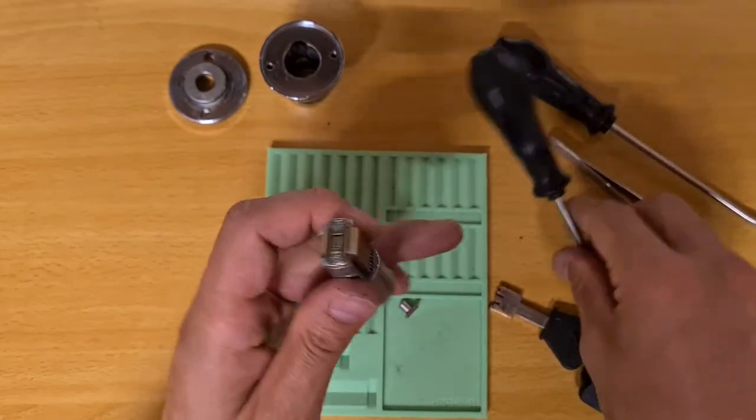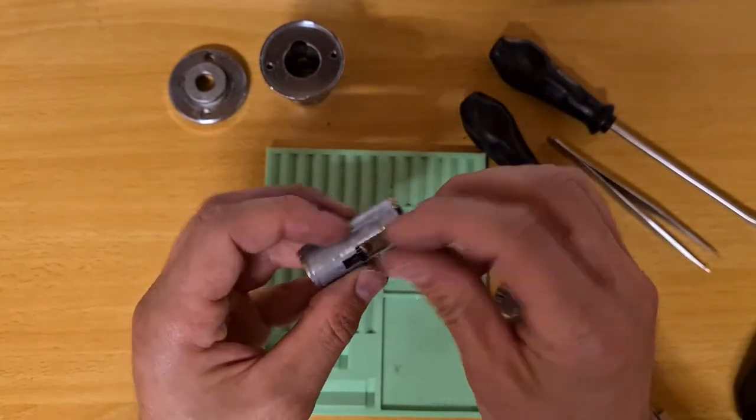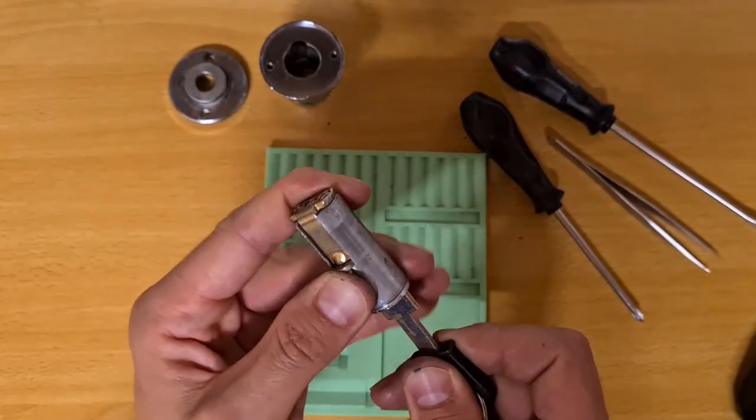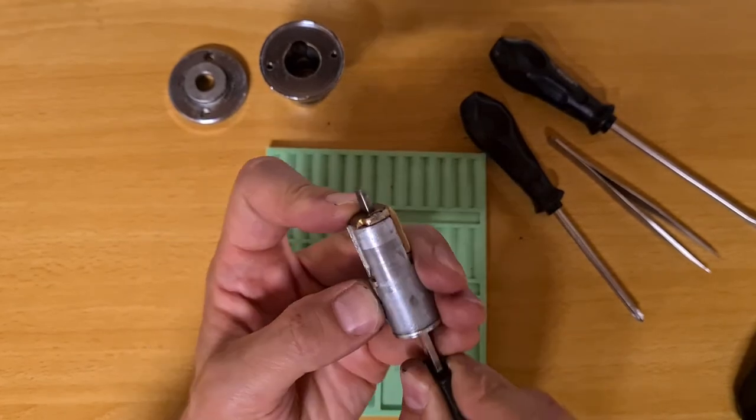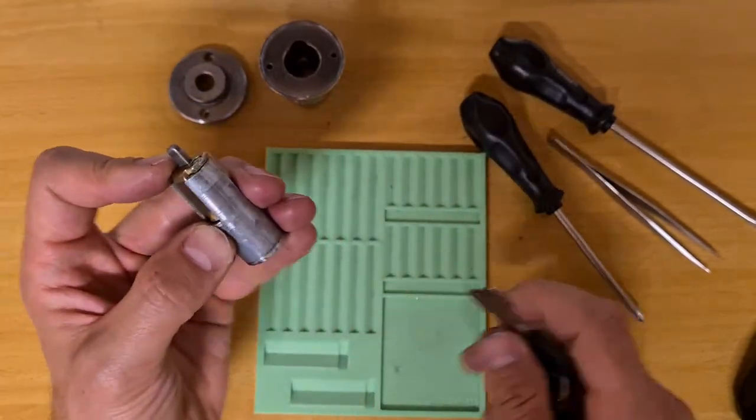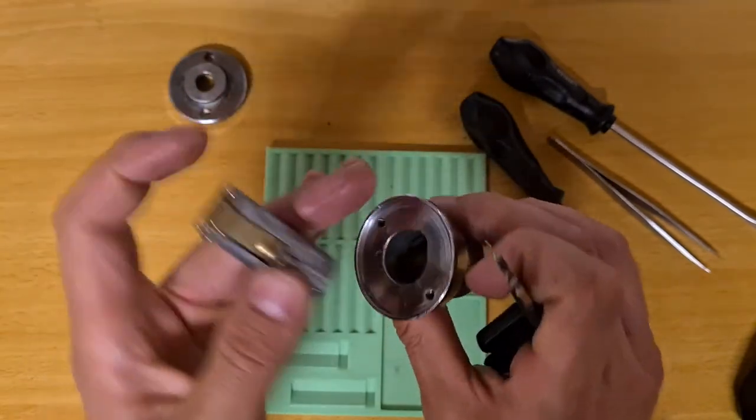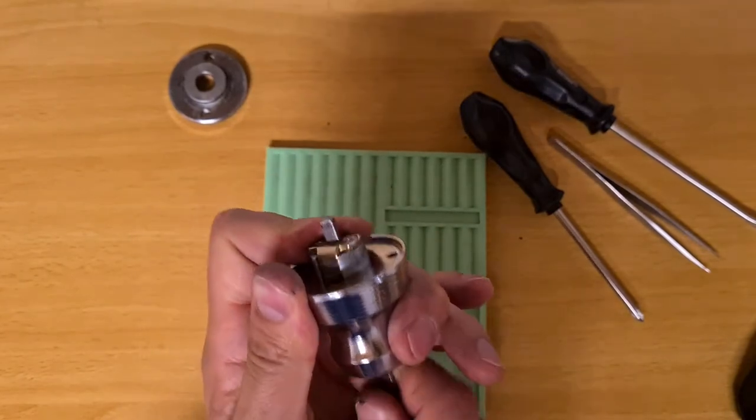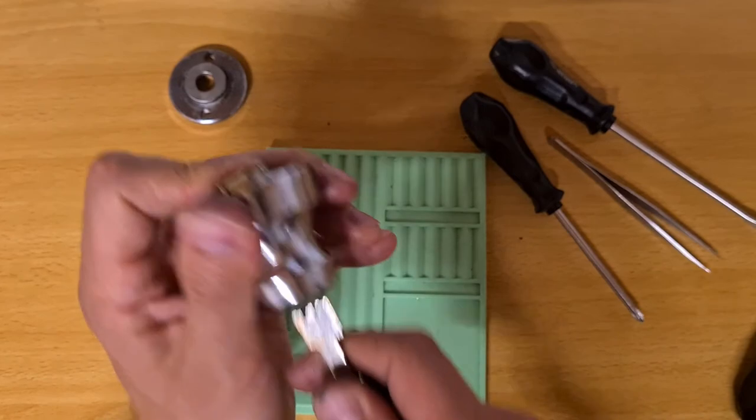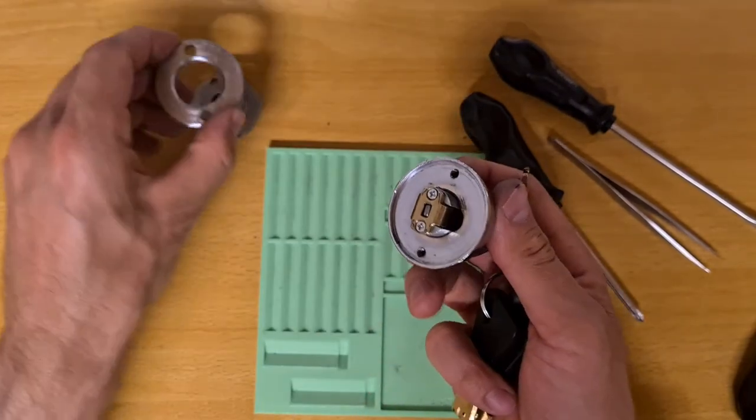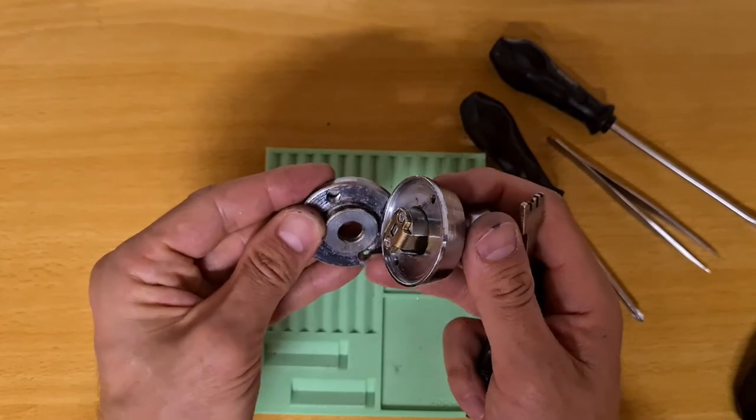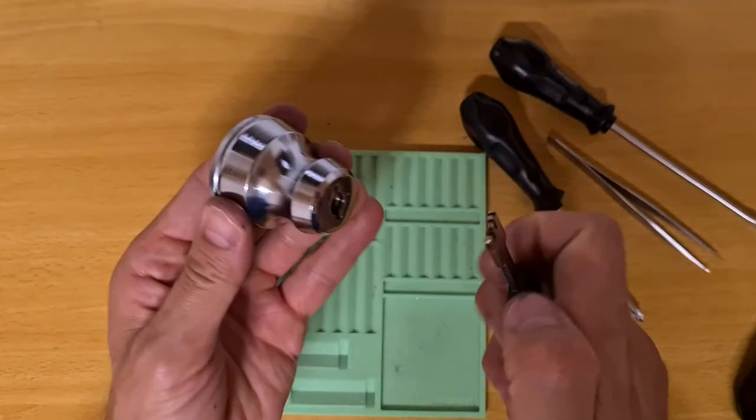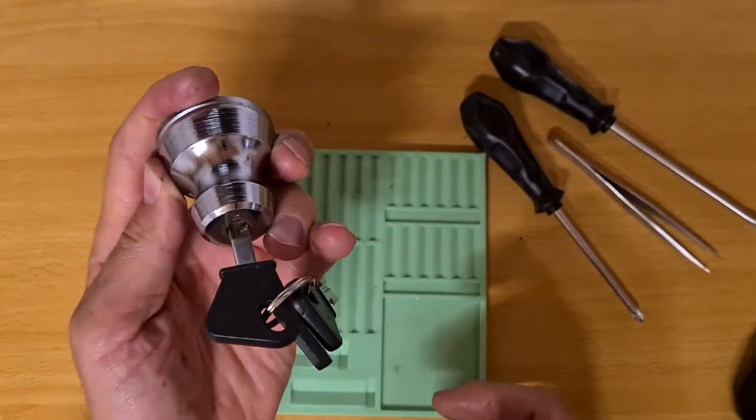All right. So that's the cylinder back together, or at least its core. Let's see. And the sidebar is in. And it can be turned and operated. With that, thank you very much for watching and enjoy the rest of your day. Bye.